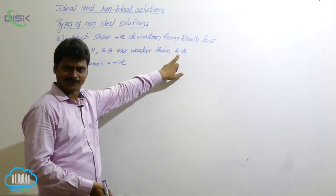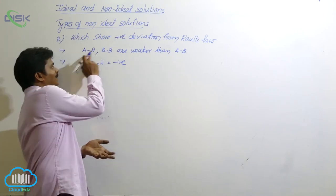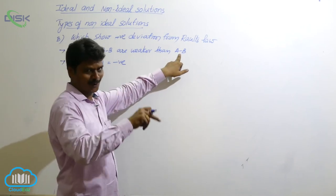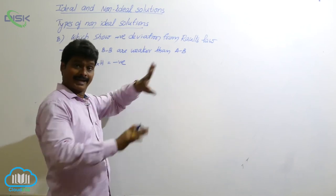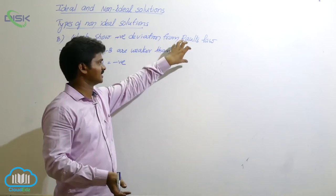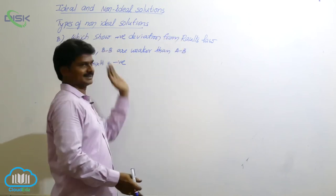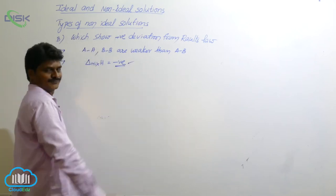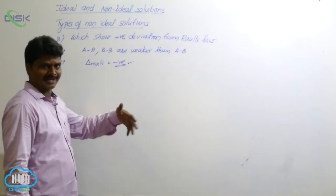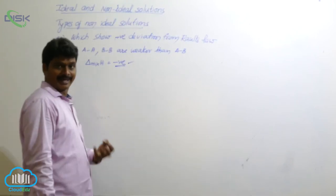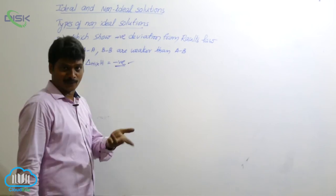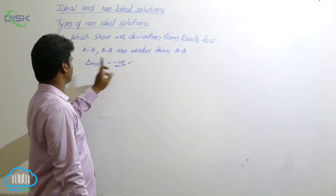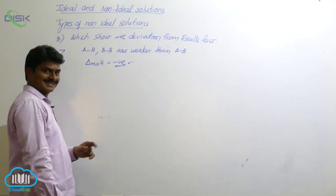AB is stronger. That's why the energy released for the formation of AB is more than the energy required for AA and BB. So here, the net value is released energy — it is more, these two are less. That's why released energy is more, which means negative. The net value of energies of bond breaking and making processes is negative, meaning energy is released. So that is the reason why enthalpy of mixing is negative.